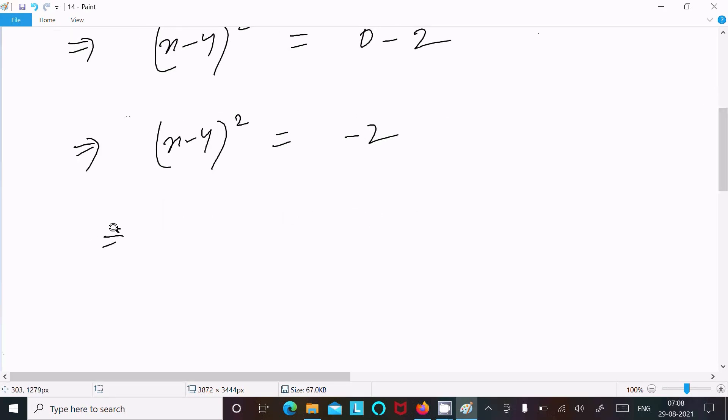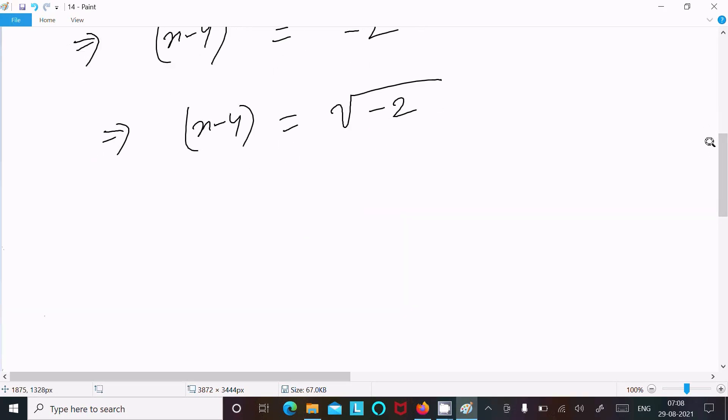After that, x minus 4. So square root, removing the square here, that comes to square root of minus 2. Now here, square root minus 2.